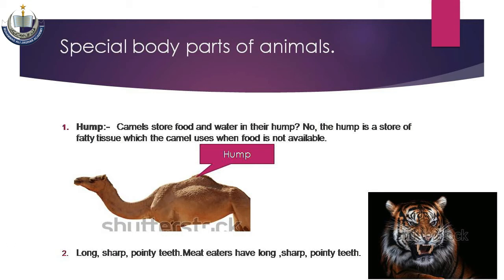Number one: عام طور پر یہ کہا جاتا ہے کہ camel یعنی اونٹ کے hump میں، جسے کوہان بھی کہتے ہیں، food اور water store ہوتا ہے۔ لیکن ایسا نہیں ہے، بلکہ camel کے hump میں fatty tissue ہوتے ہیں۔ جب camel کو food اور water کی ضرورت ہوتی ہے یا کسی وجہ سے available نہیں ہوتا، تو camel fatty tissue سے energy حاصل کرتا ہے اور اپنی غذا کی ضرورت پوری کر لیتا ہے۔